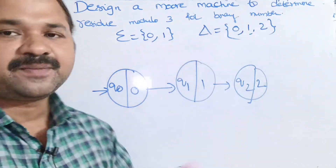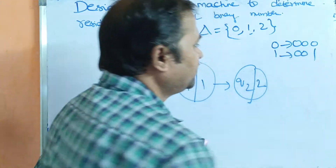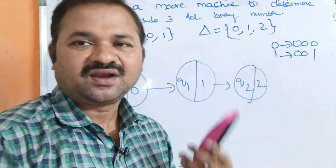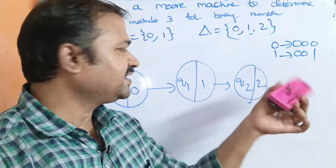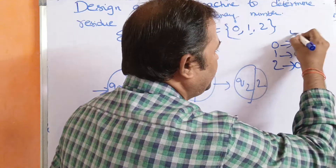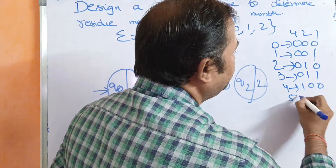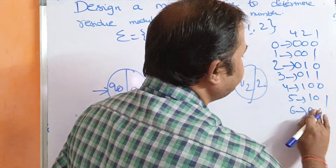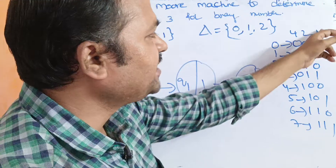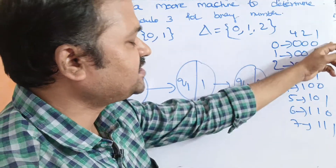Let the binary number contain 3 bits, using the notation 4, 2, 1. So: 0 is 000, 1 is 001, 2 is 010, 3 is 011, 4 is 100, 5 is 101, 6 is 110, and 7 is 111. We are using 3 bits because we are performing the operation modulo 3. If you take any number of bits, you will get the same state diagram.